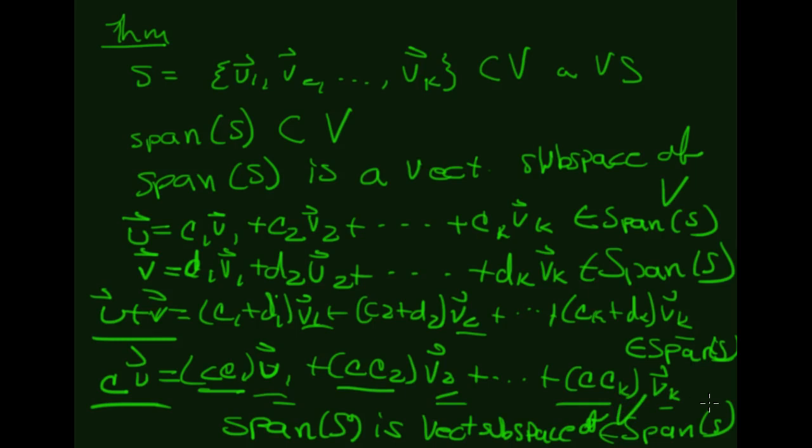If I take some constant C times U, I get C·C1·V1 + C·C2·V2 + ... + C·CK·VK, which is just a new set of coefficients times the things in S, so this is still in span(S). Since I'm closed under addition and scalar multiplication, the span of S is a vector subspace of V. That proves the theorem. We'll come back to spanning and minimal spanning sets when we get into bases. For now, we're going to make a small swerve and get into the major idea of linear independence.